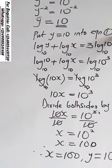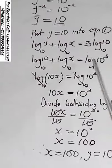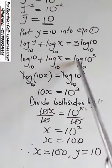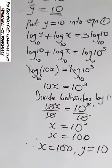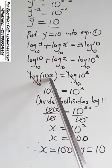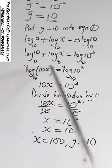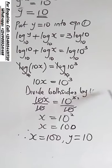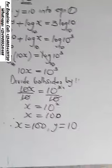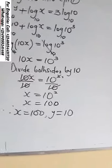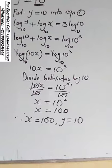Now put y equals 10 into equation 1. Anywhere you see y, replace it with 10. This gives log 10 base 10 plus log x base 10 equals log 10 raised to the power 3 base 10. Following the law of logarithm, plus means multiplication, so it becomes log 10x equals log 10 cubed. The logs cancel on both sides, giving 10x equals 10 raised to the power 3. Dividing both sides by 10, x equals 10 raised to the power 2, which is 100.